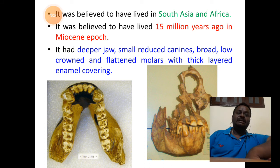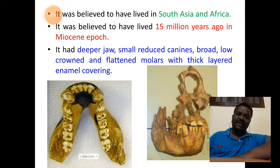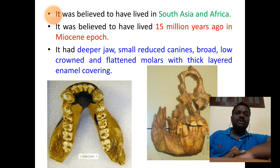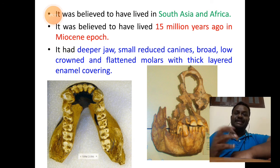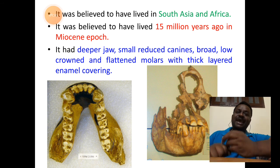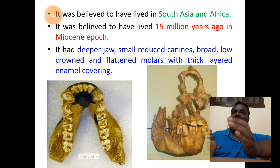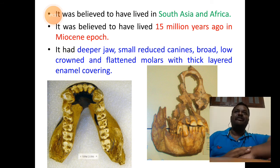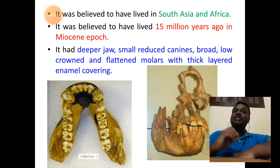From Dryopithecus originated the next group of human ancestor called Ramapithecus. This Ramapithecus is a pre-human ancestor who lived during the Miocene epoch and is considered to be the first man-like ape. He looked like a man with human-like features recorded in the fossil, especially of the lower jaw. It was believed that Ramapithecus lived in South Asia and Africa, around 15 million years ago. He had a very deep jaw, reduced canines compared to Dryopithecus, and broad, low-crowned, flattened molars covered with thick enamel, indicating a stronger herbivorous nature.